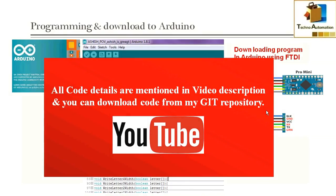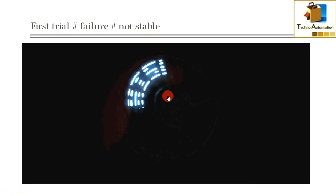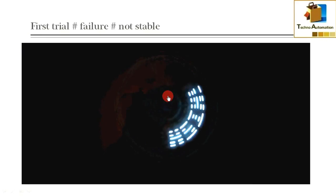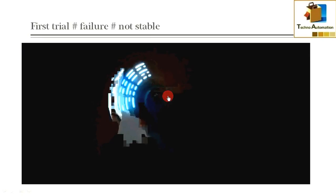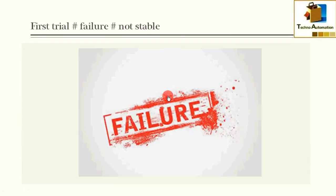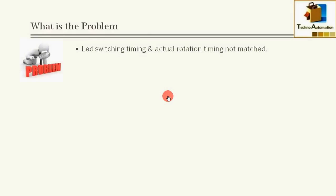So this is the final showdown. Let's play the video of my POV display. We can see the character, it's working, but it's rotating randomly and it seems like a drunken man. So this is the failure of my project. What is the problem? The problem is LED switching time and actual rotation time is not matched.